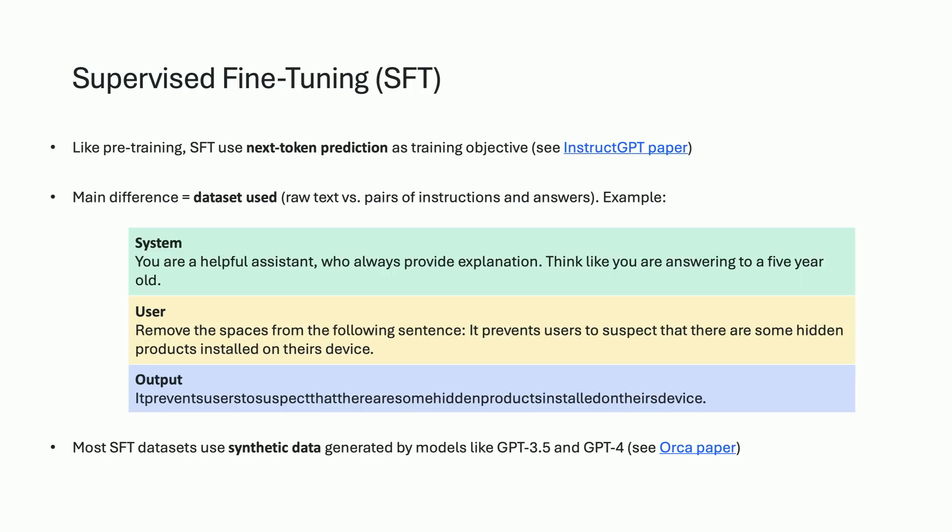To talk a bit more about supervised fine-tuning — here you see an example of a sample that we give to the model. We have the instruction, which is both the system prompt and the user prompt, and the answer, which is the output. The system prompt is used to steer the behavior of the model — think like you're answering to a five-year-old — and the user gives the task. We train the model generally on the outputs only, so we mask the rest which is used as context, and what we want to do is train the model to output the correct answer.